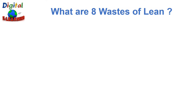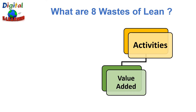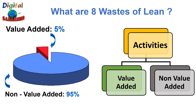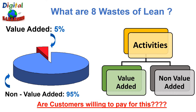Everything that is done in a company is divided into two groups: value-added activities and non-value-added activities, or waste. Generally speaking, value-added activities are what customers pay for, and waste is anything that the customer does not care about. If you look at a graphical display, around 5% of the activities we do are value-added; the rest, 95%, are non-value-added. We must aim to reduce non-value-added activities and focus more on value-added ones.